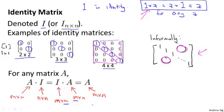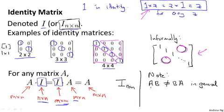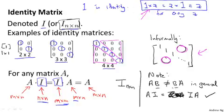Whenever we write the identity matrix I, the dimension is often implicit from context. So the two I's in the equation I times A equals A times I may actually be different dimension matrices — one N by N and the other M by M. When we want to make the dimension explicit, we write it as I subscript N by N. Note that earlier I said A times B is not in general equal to B times A, but when B is the identity matrix, this does hold true — A times I does equal I times A. It's just that this is not true for other matrices B in general.